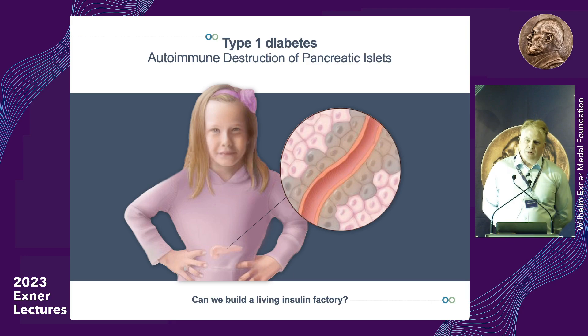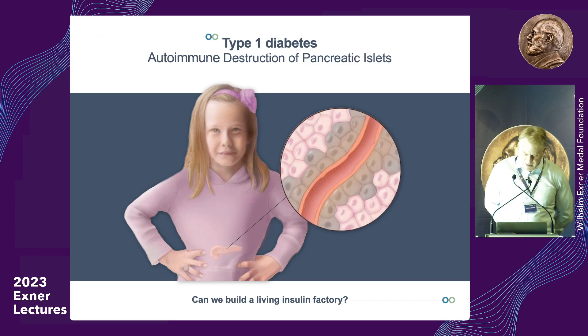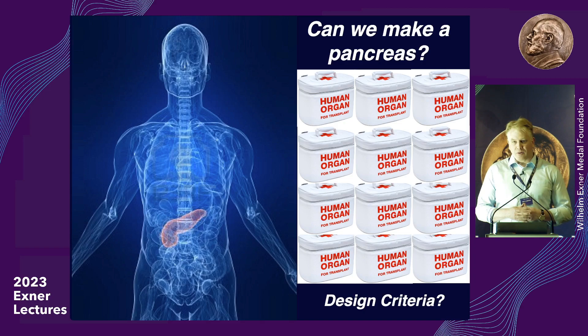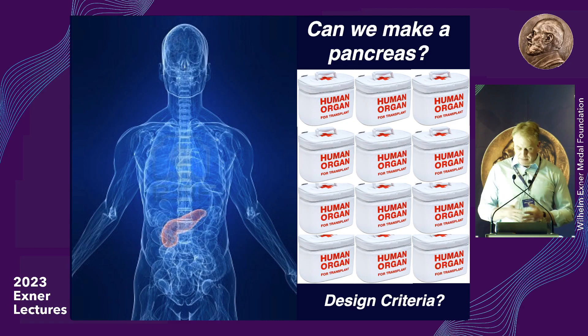Diabetes is the loss of blood sugar control. In type 1 patients, this is caused by autoimmune destruction of the insulin-producing cells, the beta cells. The goal is really to create a replacement pancreas — or at least the parts that make insulin — and not a customized one for every patient, since there are millions of them. Can we make one device, mass produce it, and have it work in everybody? That's the dream.